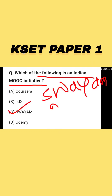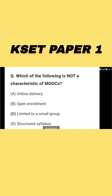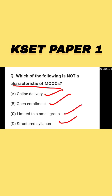SWAYAM was launched with the Ministry of Education. Next question: which of the following is NOT a characteristic of MOOCs? Options are: A) Online delivery, B) Open enrollment, C) Limited to small group, D) Structured syllabus. Options A, B, and D — online delivery, open enrollment, and structured syllabus — are all characteristics of MOOCs. Option C, limited to small group, is NOT a characteristic of MOOCs, so option C is the right answer.